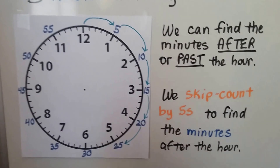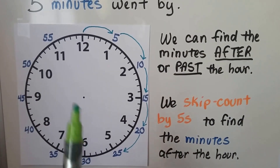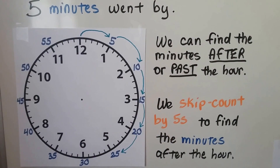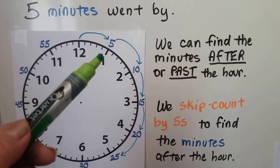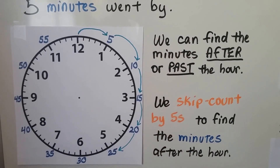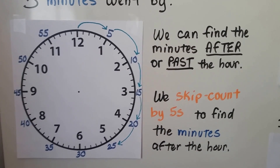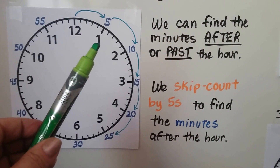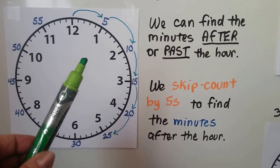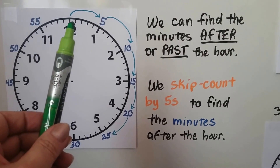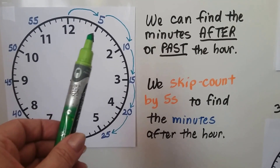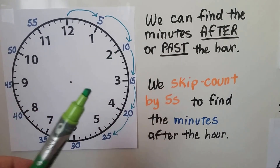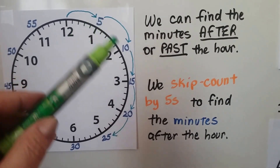Here's the face of a clock — we call it the face — and we have the hands. We have a longer minute hand and a shorter hour hand that doesn't reach very far. Every time we move to a new number, five minutes have gone by. We find the minutes after the hour by skip counting by fives. If the minute hand is pointing at the one, it's five minutes past. Each little line is a minute: one, two, three, four, five. Then it would go six, seven, eight, nine, ten.